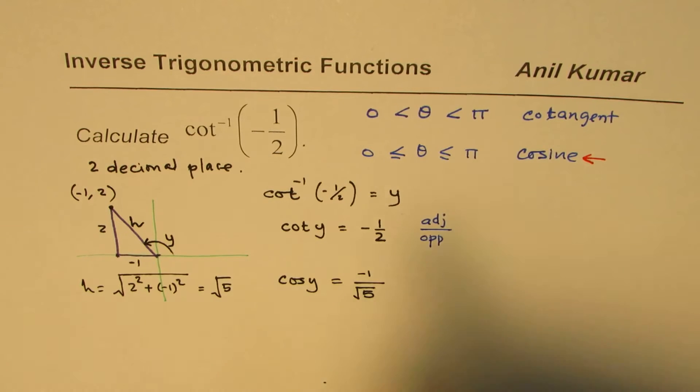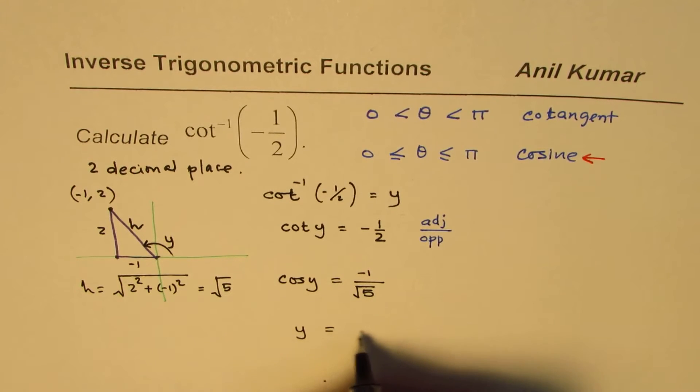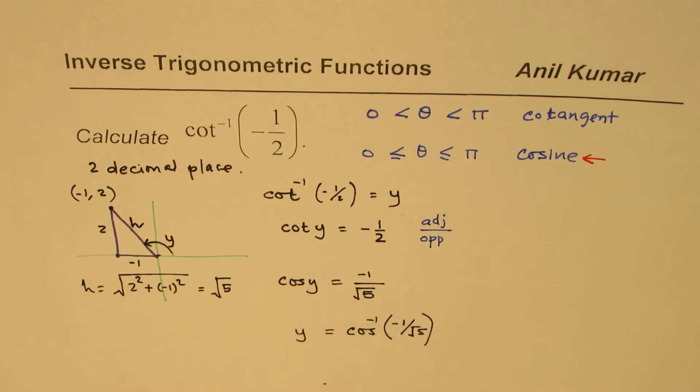The purpose is to find y. So, we could also find y using the second equation as cos inverse of minus 1 over square root 5. These are the steps which I hope will make you understand why we use cosine inverse to calculate cot inverse, and how do we get that value.